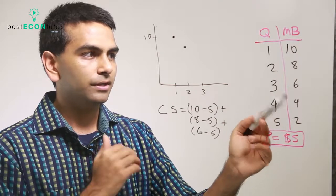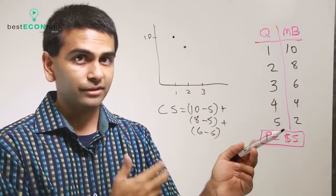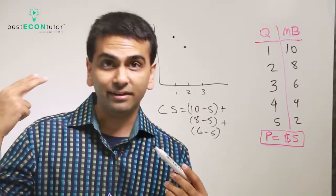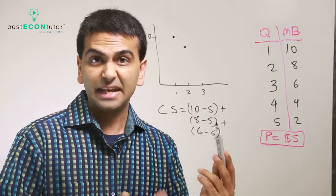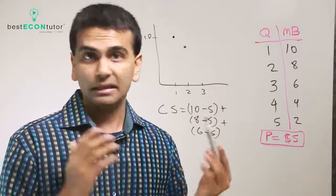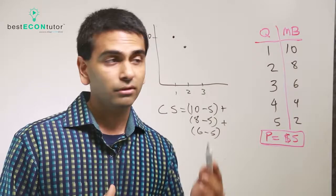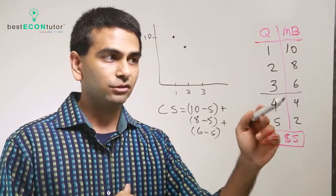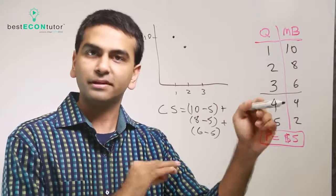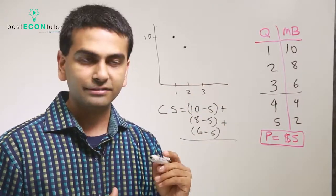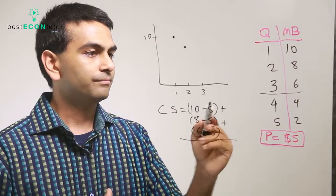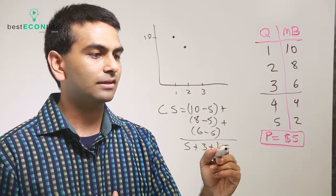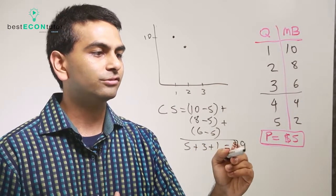The fourth item only gives you a $4 benefit, so you wouldn't pay $5 for it. You'd technically get negative $1 of consumer surplus — but in a free market you don't have to buy it. So we assume this customer stops buying at three. Their overall consumer surplus is $5 plus $3 plus $1, which equals $9.